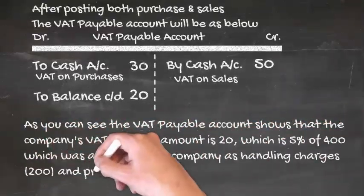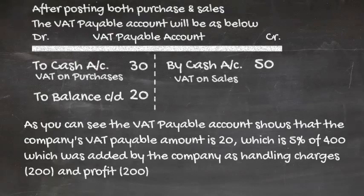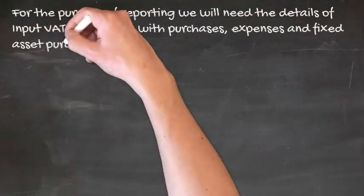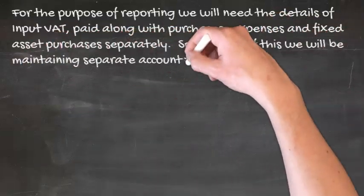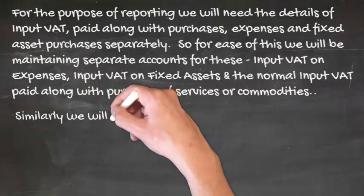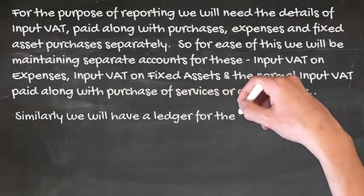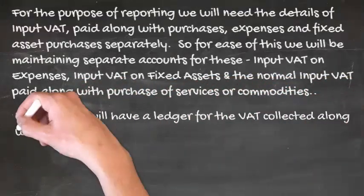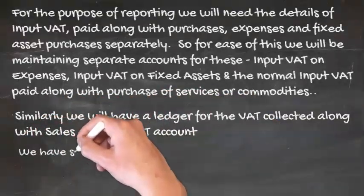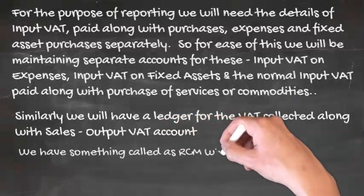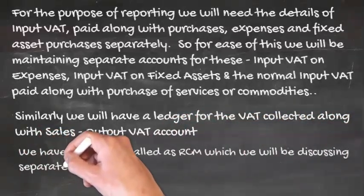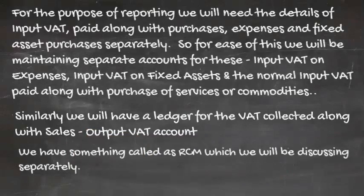Hope this makes it clear about the concept of VAT and its accounting. For the purpose of reporting, we will need the details of input VAT paid along with purchases, expenses, and fixed asset purchases separately. So for ease of this, we will be maintaining separate ledgers: input VAT on expenses, input VAT on fixed assets, and the normal input VAT paid along with purchases of services or commodities. Similarly, we will have a ledger for the VAT collected along with sales — the output VAT account. We also have something called RCM, which we will be discussing separately.